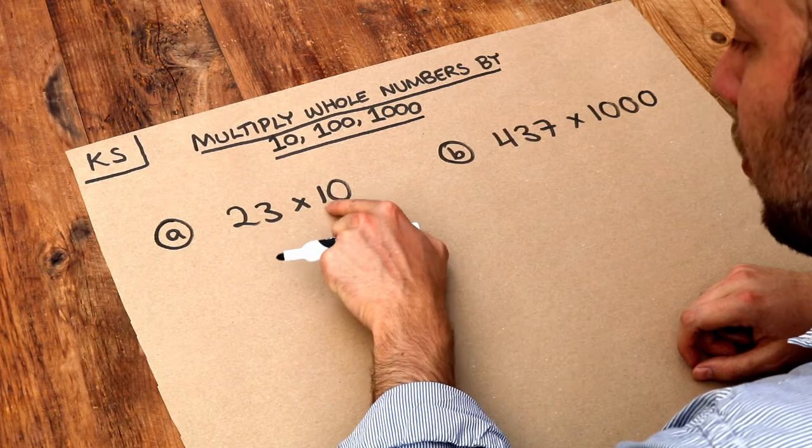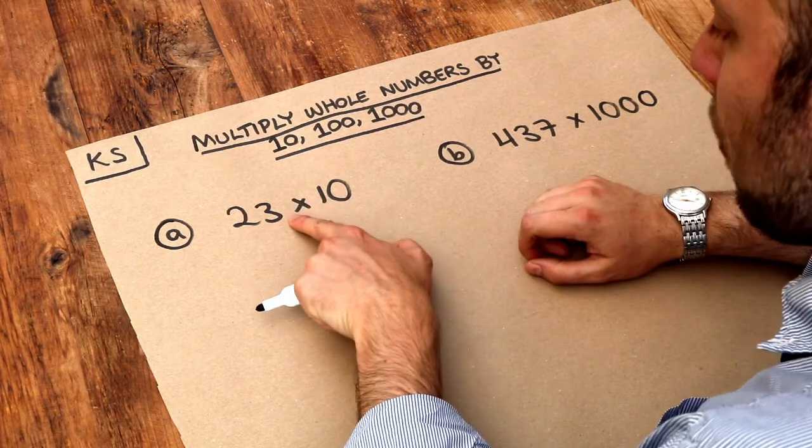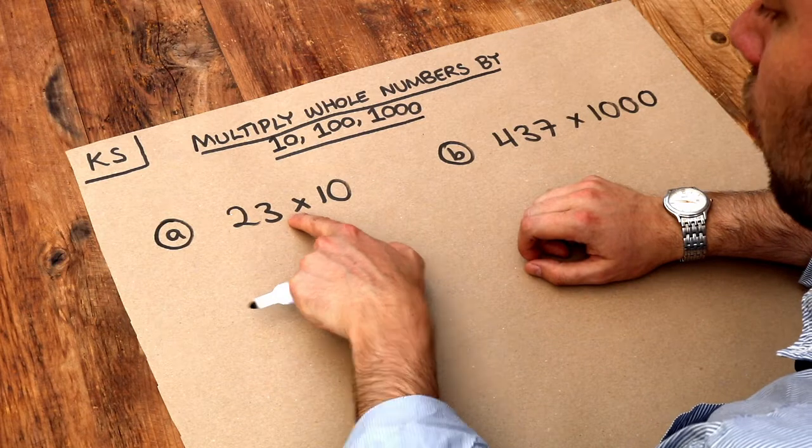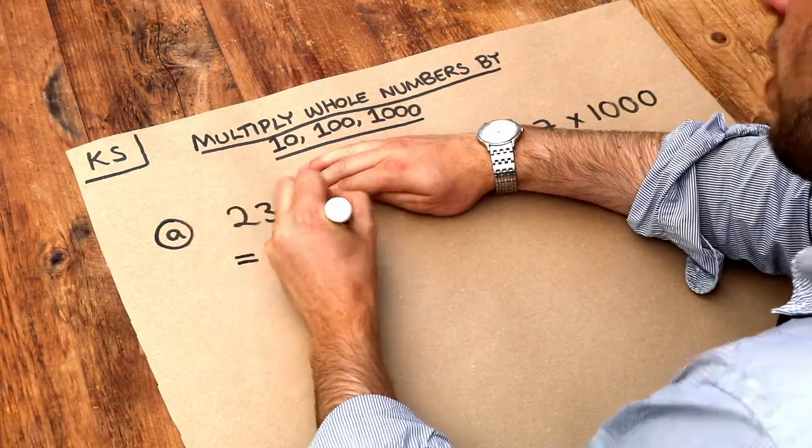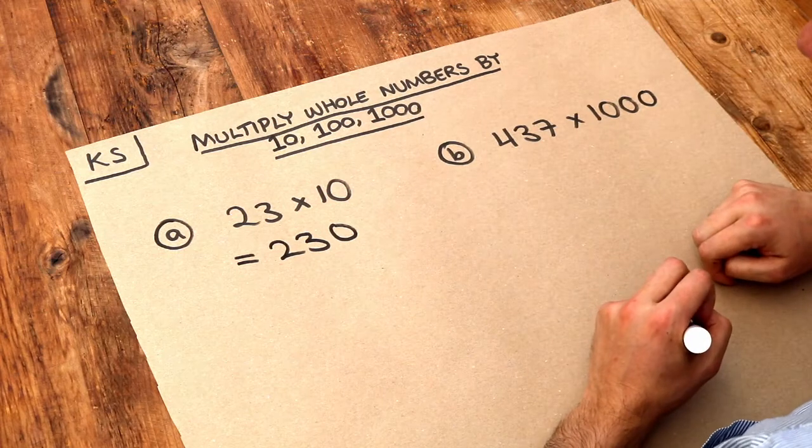So here we can see on the end of that one we've got one zero, so therefore we're going to put one zero on the end of that 23. So that just becomes 23 with one zero like that, so we have 230.